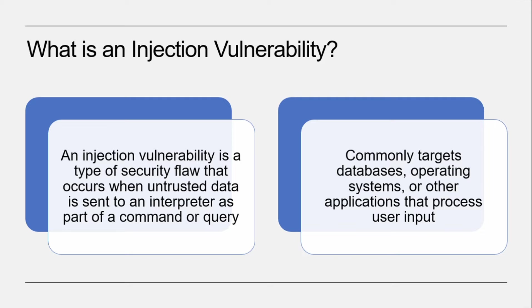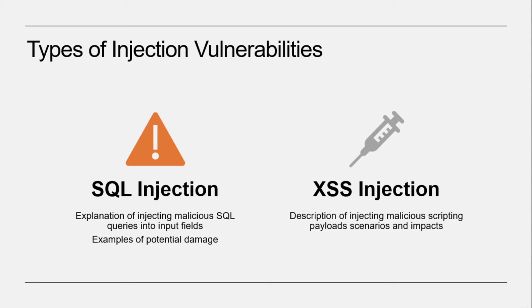A successful injection can provide attackers with unauthorized access, allowing them to view or edit critical information and gain access to the system. Now let's see the types of injection vulnerability. There are several types of injection attacks that can leave an organization vulnerable.